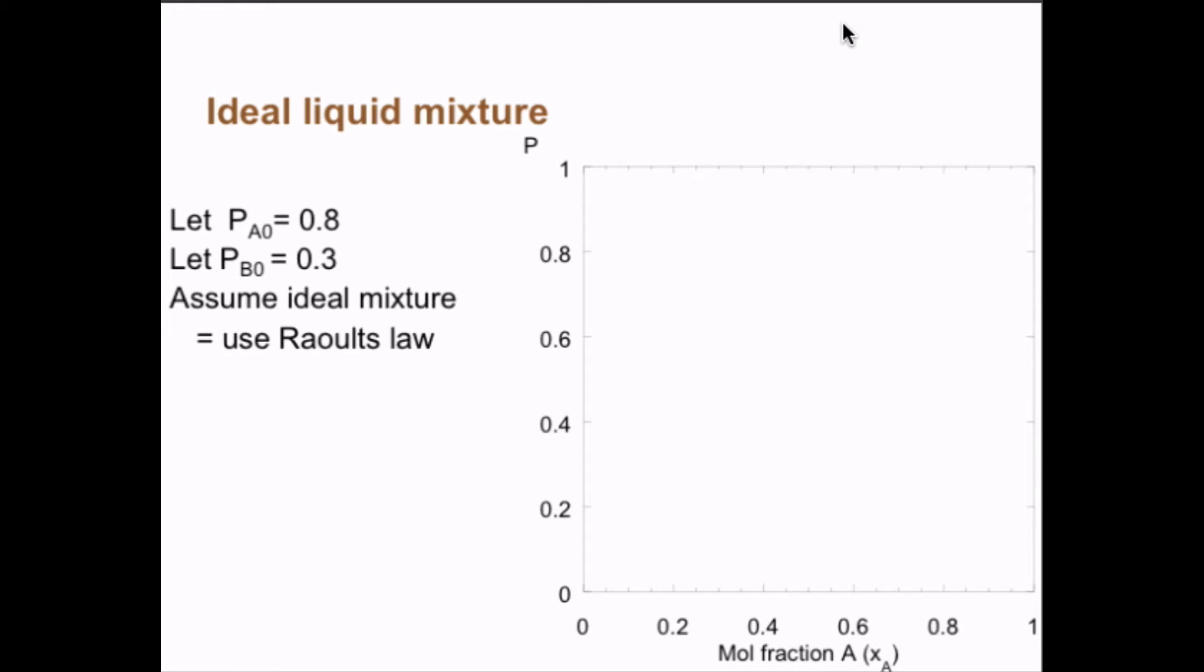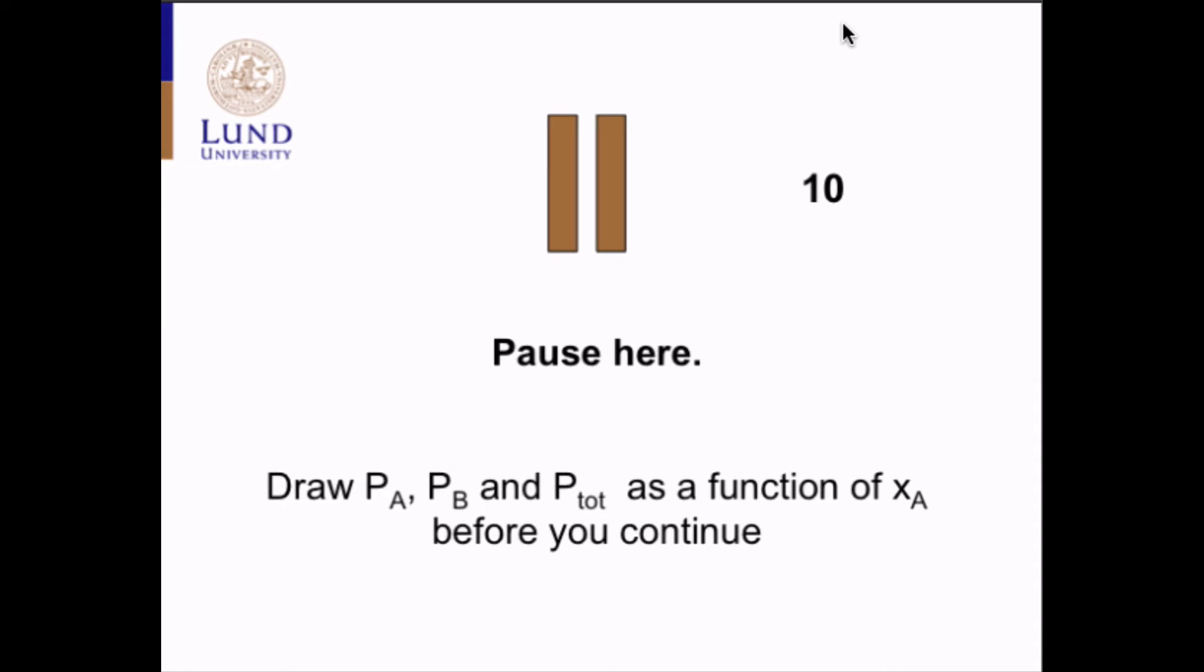Assume an ideal mixture and use Raoult's law to draw the partial pressure of A as a function of the molar fraction of A, and the partial pressure of B as a function of x_A, and finally the total pressure—that is the partial pressure of A plus the partial pressure of B—as a function of x_A. You can pause here and draw that yourself.